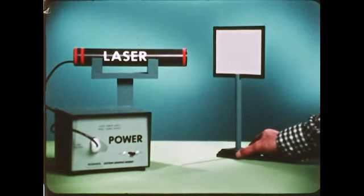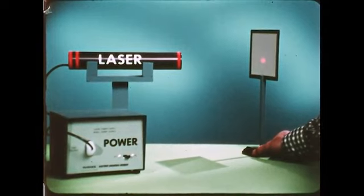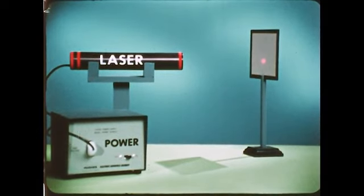But a white card reflects the light, sending some of it in our direction. The reflected light that reaches us is what makes the spot visible.